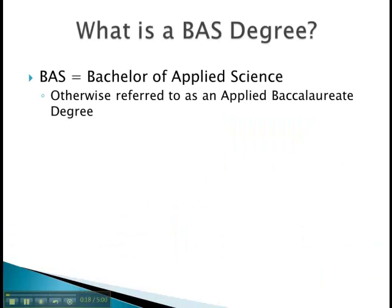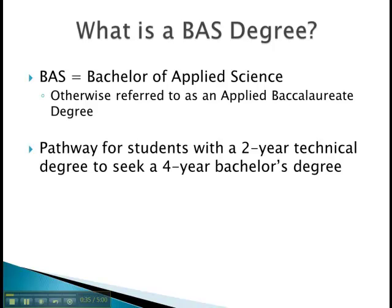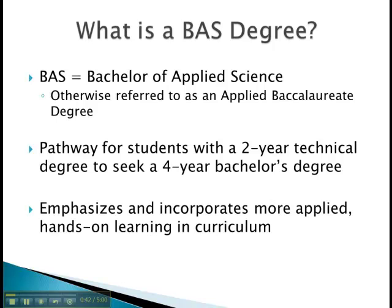What is a BAS degree? BAS stands for Bachelor of Applied Science, otherwise referred to as an Applied Baccalaureate degree. This is a great pathway for students completing a two-year technical degree to seek a four-year bachelor's degree by utilizing the coursework completed throughout the associate's degree. With an associate's, a student will only need two more full-time years of upper-division AD BAS courses to complete the degree. A BAS degree emphasizes and incorporates more applied, hands-on learning within the curriculum. In particular, this AD BAS degree has three practicum courses to experience real-world practical applications.